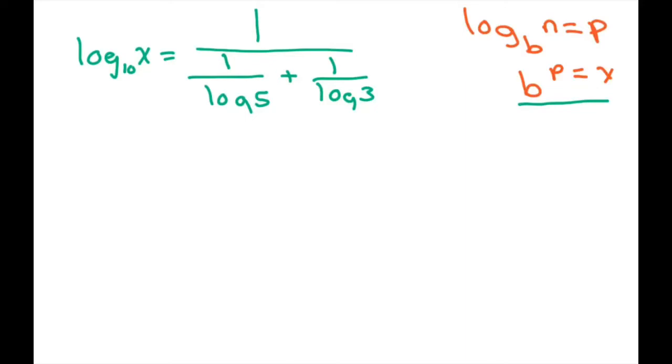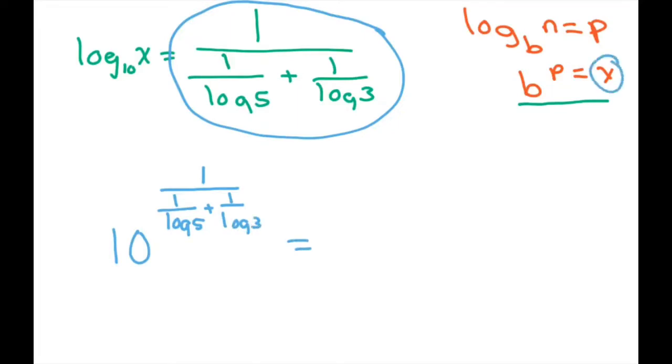Remember, your base is 10, so we write 10. This whole thing is your power. So we have 10 to the power of 1 divided by 1 divided by log 5 plus 1 divided by log 3. That equals x.